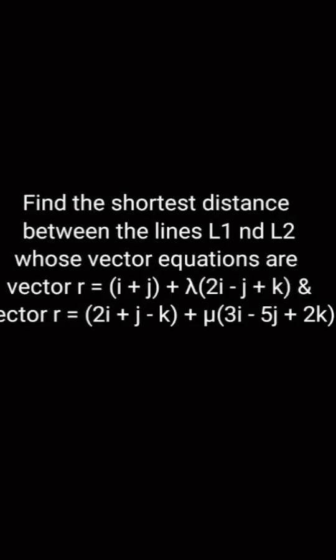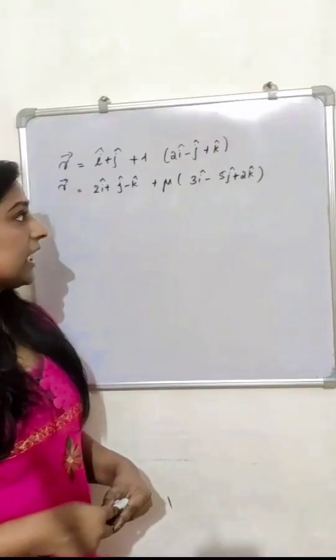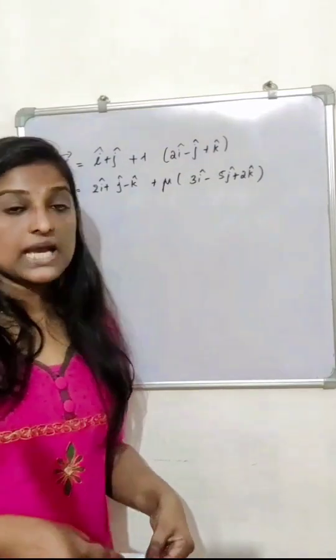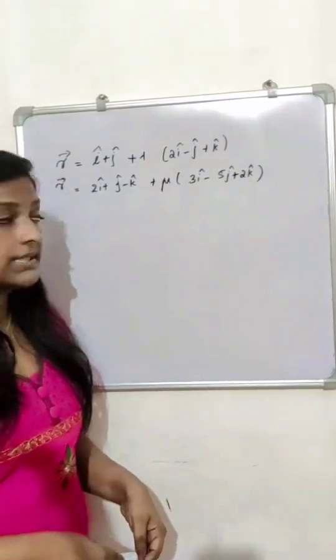Find the shortest distance between the lines L1 and L2 whose vector equations are: r vector equal to i plus j plus lambda into 2i minus j plus k, and r vector equal to 2i plus j minus k plus mu into 3i minus 5j plus 2k.